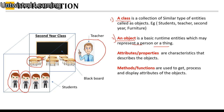The third terminology is attributes or properties. Attributes are characteristics that describe the object. For example, taking the class student — the name of the student is one attribute, the roll number can be another, and height, weight, mobile number, or gender can also be attributes relating to the student class.